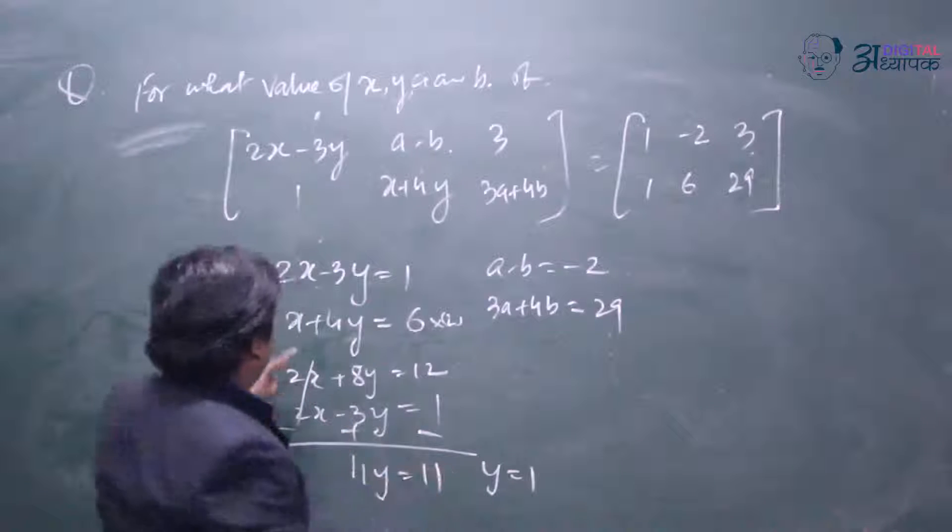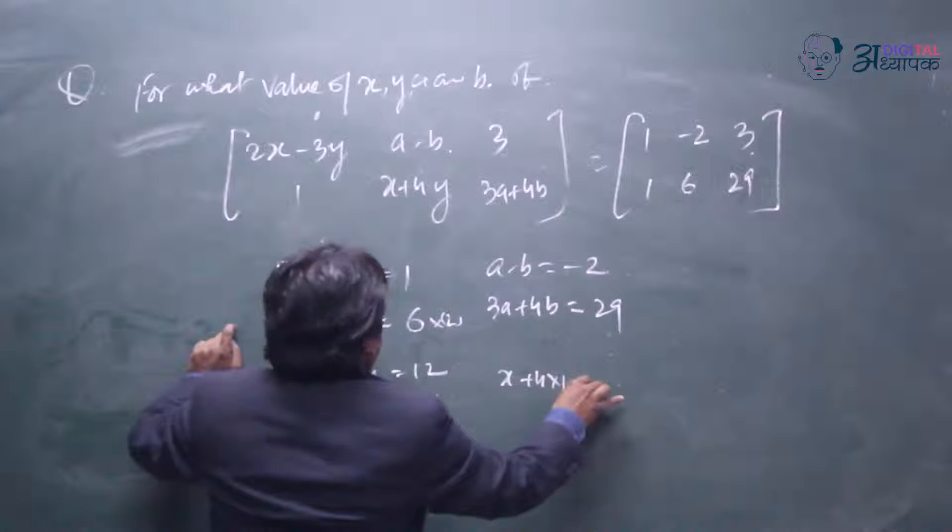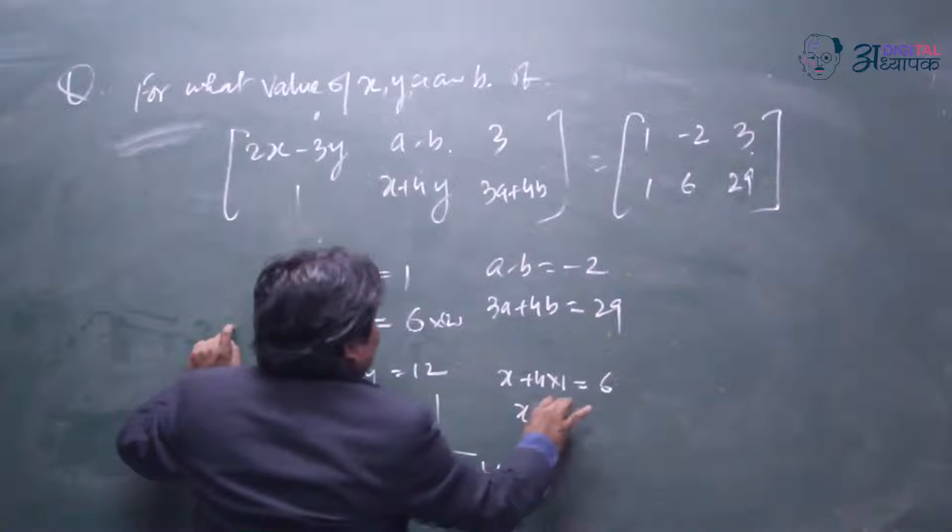And then putting the value of y in this equation, we get x plus 4 into 1 is equal to 6. So x is equal to 2.